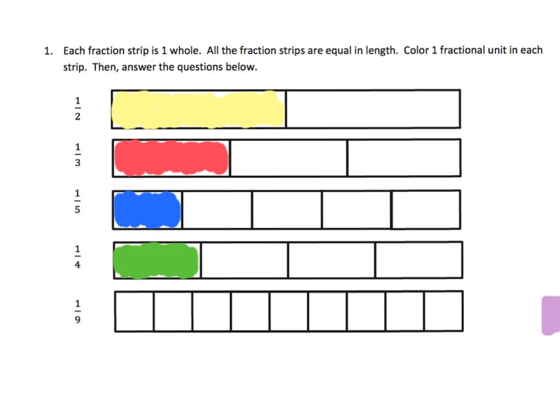This is kind of tricky — they went a little out of order with one fourth and one fifth, but pay attention to it. So what do we notice as the denominator gets bigger? As the denominator gets bigger, the fractional piece is getting smaller. Parents and teachers, you can ask your kids: why are the pieces getting smaller as the denominator gets bigger?